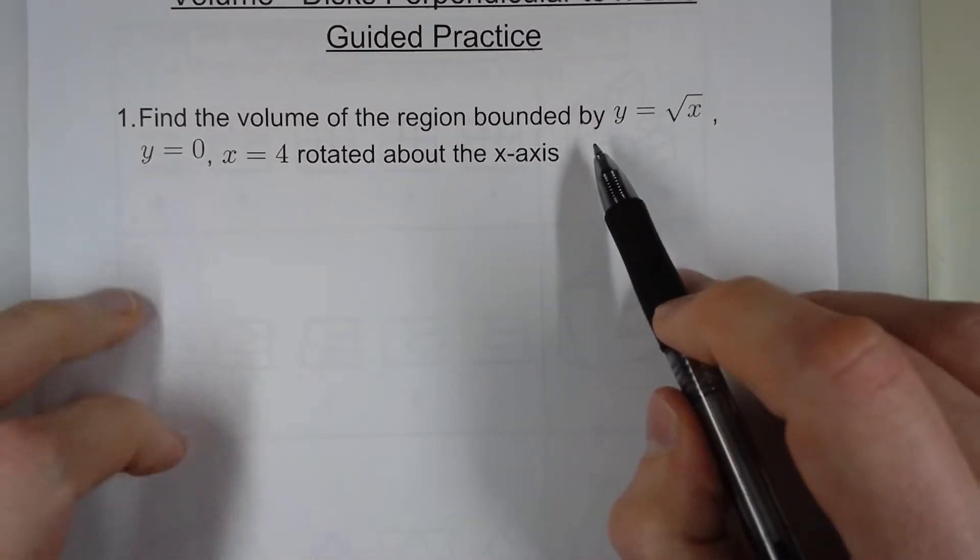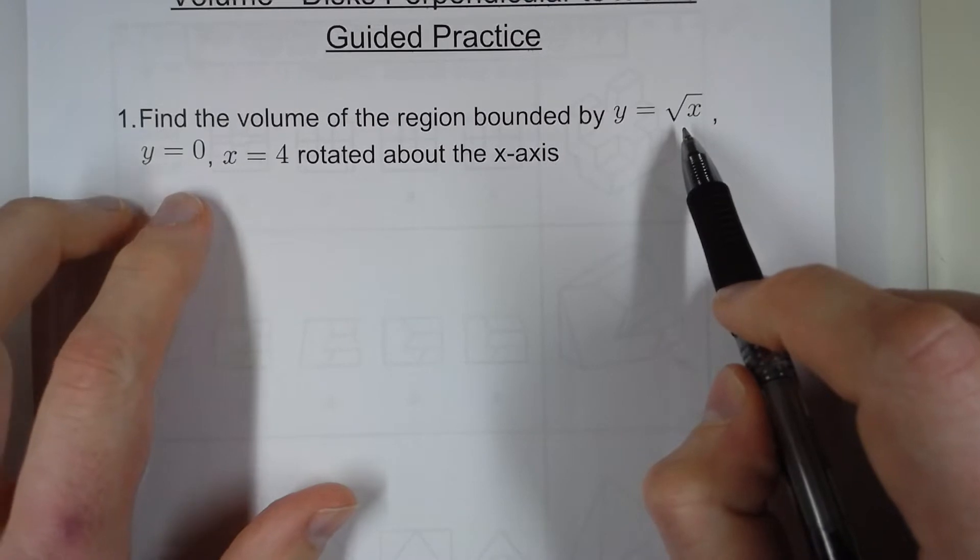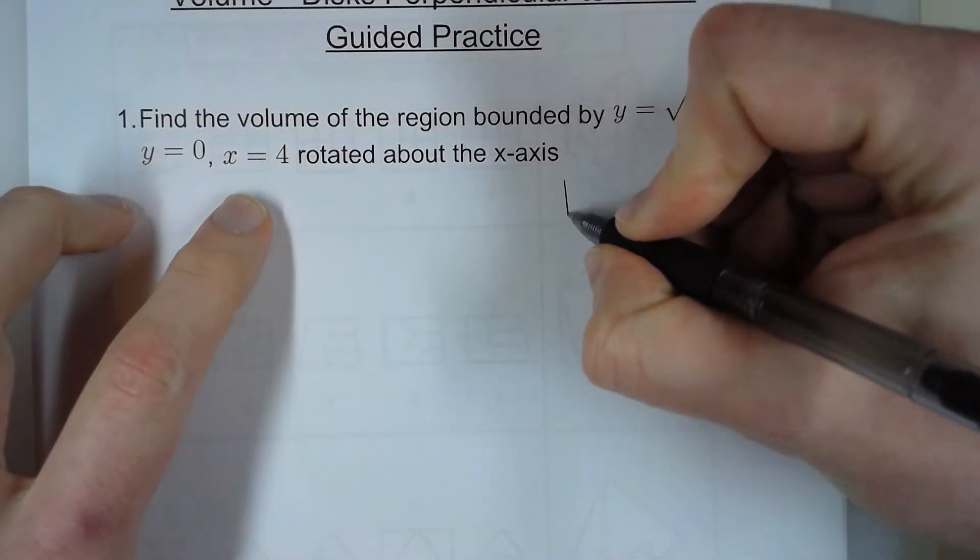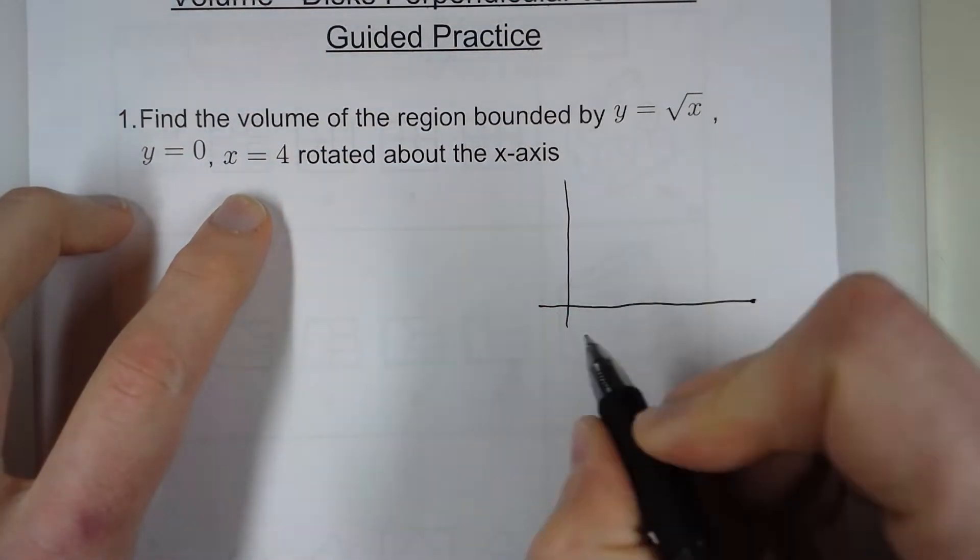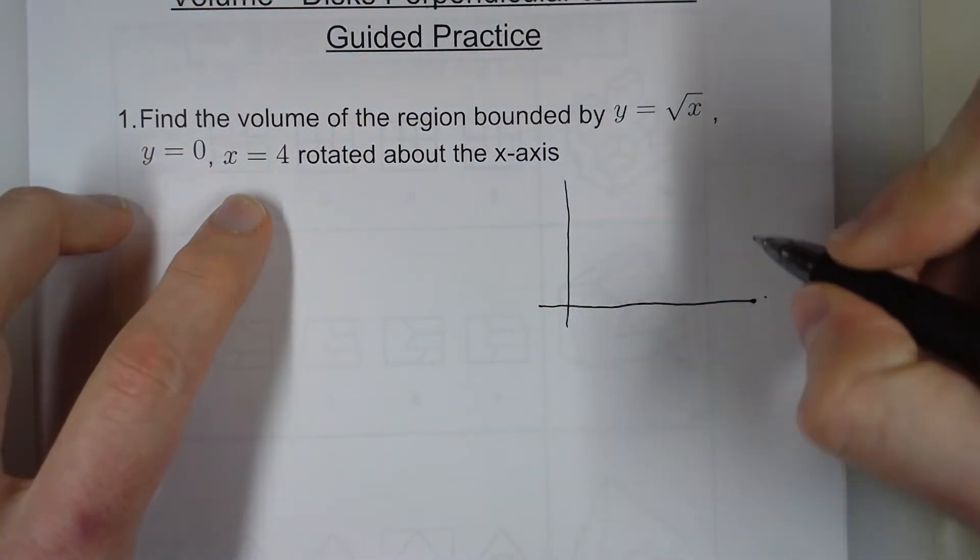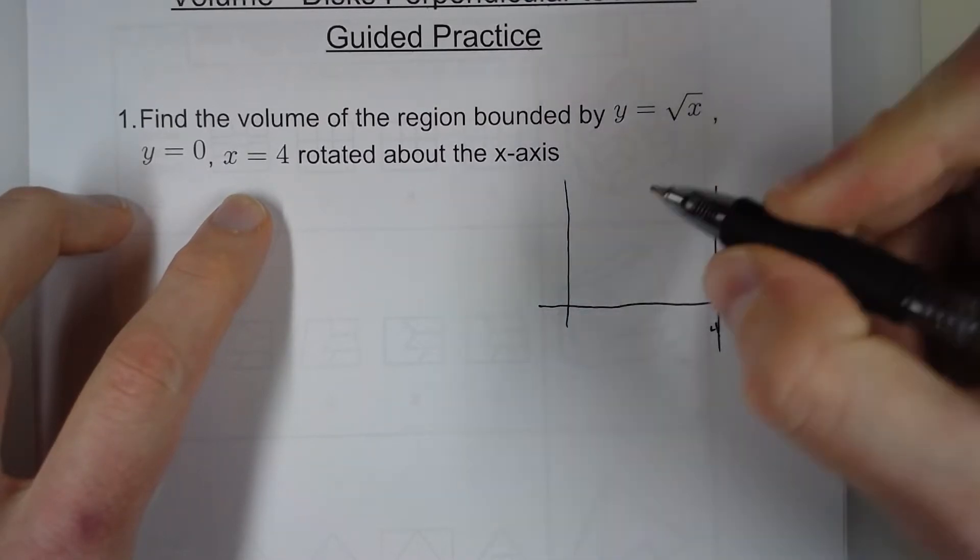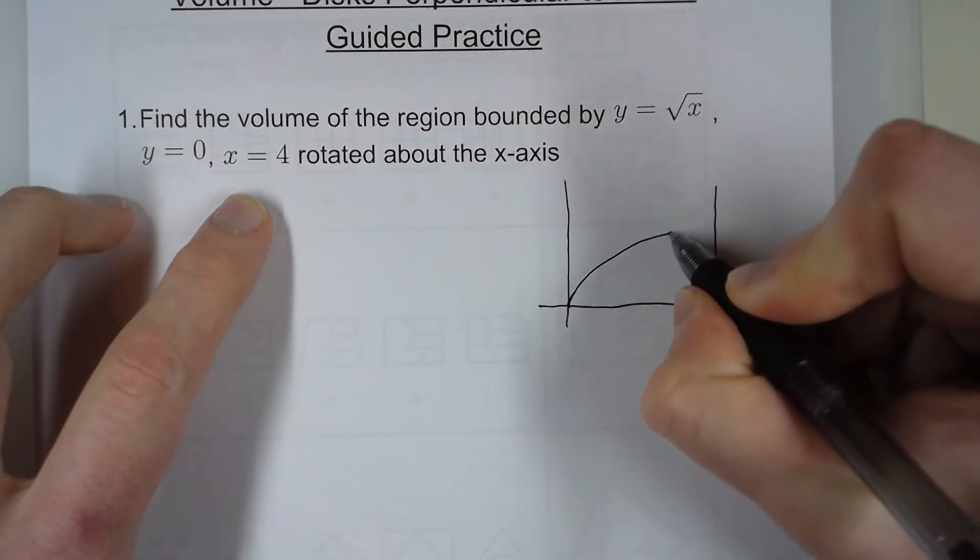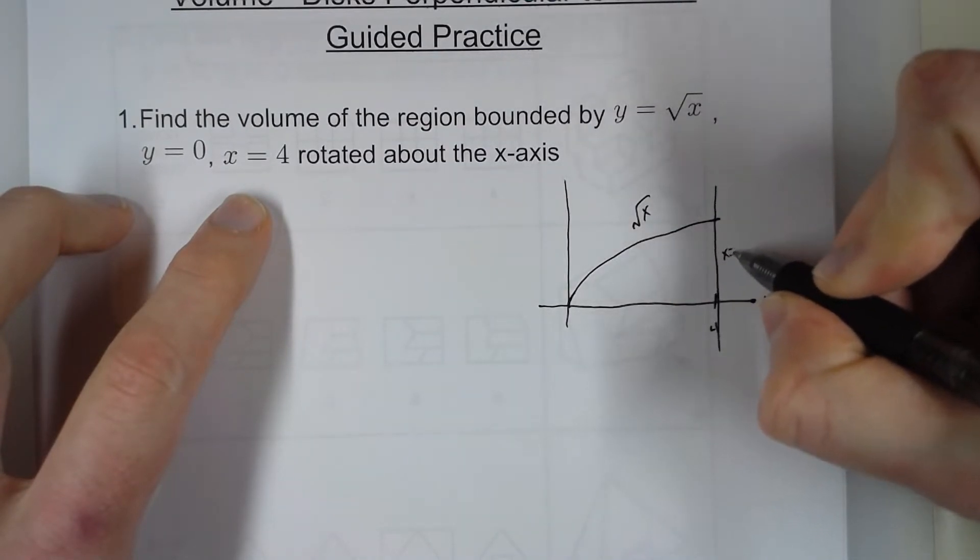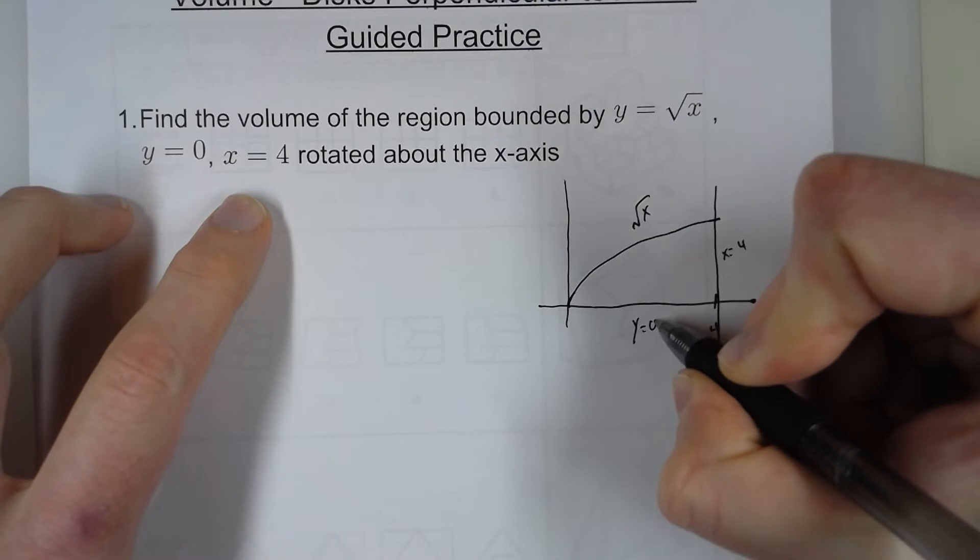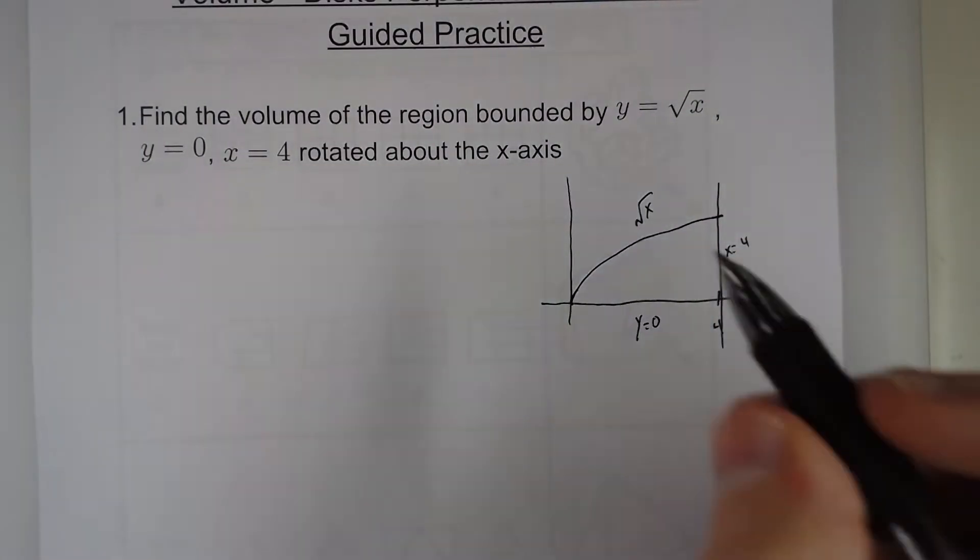So what we have is a region bounded by square root of x, y equals 0, and x equals 4. So let's draw that. y equals 0 is the x-axis. x equals 4 is this line right here. And then we have square root of x right here. Now that's just the region. So that's this part.